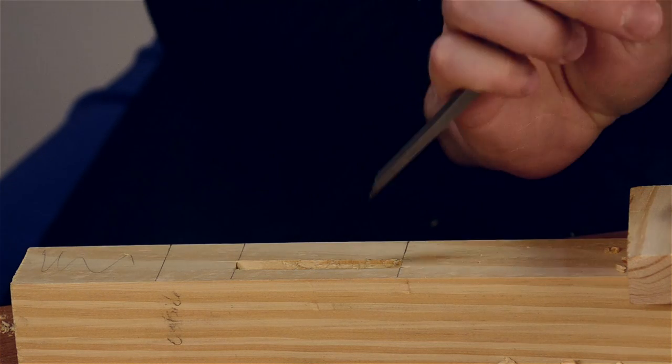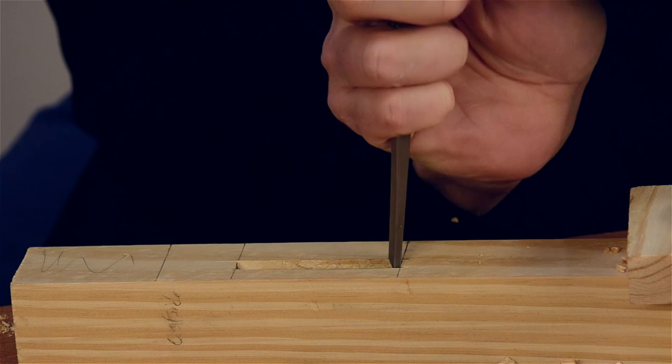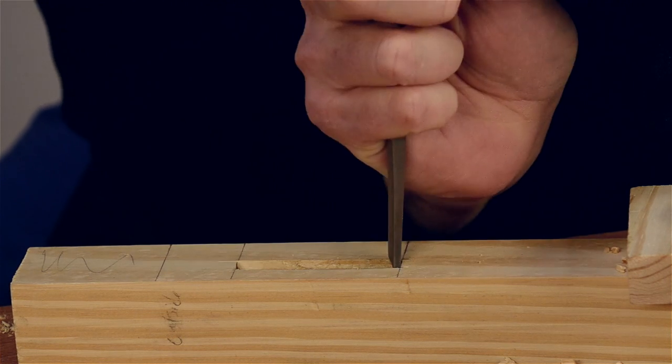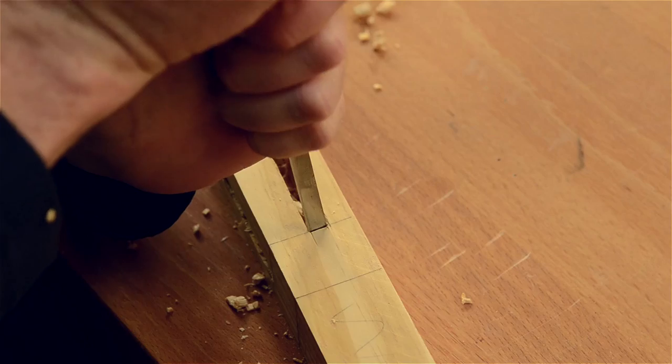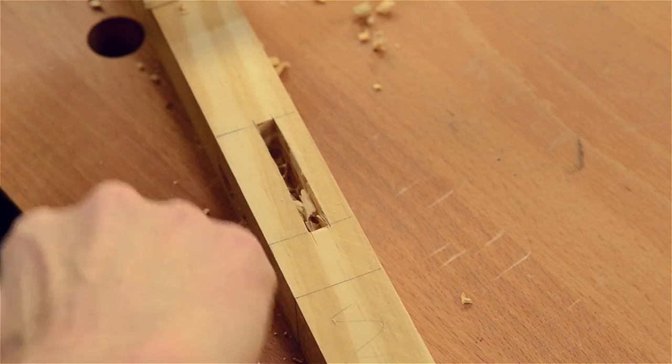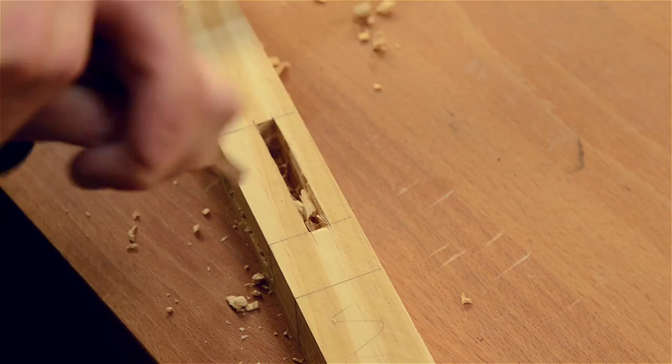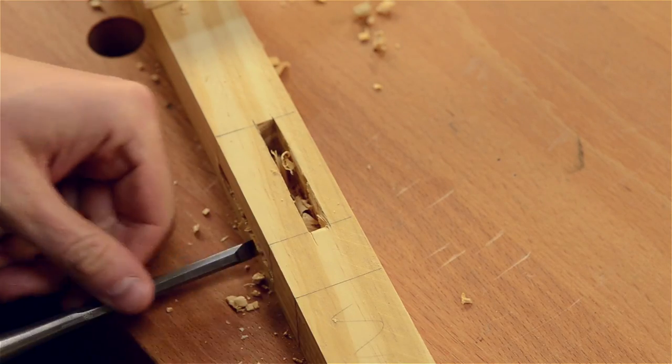And then I take this quarter inch chisel, which is slightly smaller than my mortise chisel, and I also pare down on both edges just to make sure that there's no bulges in there. And that's looking pretty good in there.